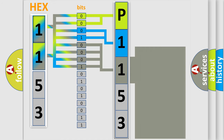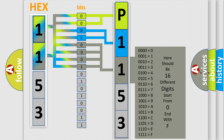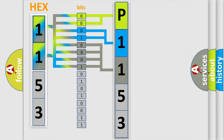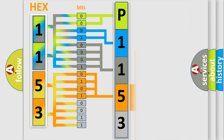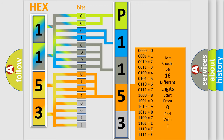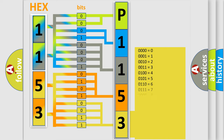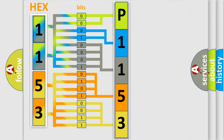The second byte is composed of a combination of eight bits. The first four bits determine the fourth character of the code, and the combination of the last four bits defines the fifth character. A single byte conceals 256 possible combinations.